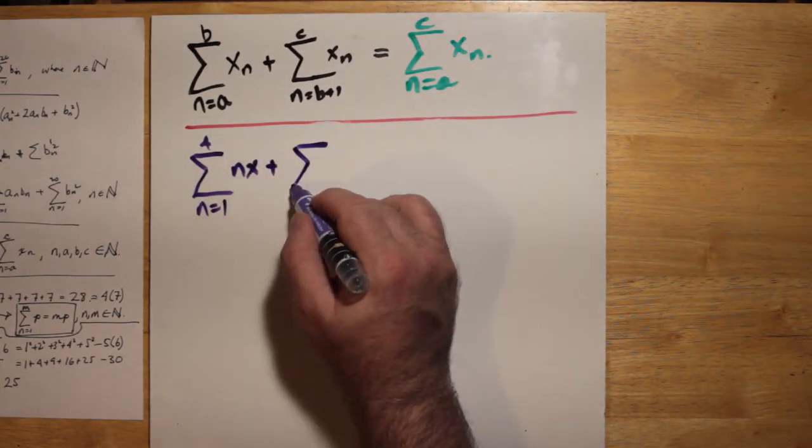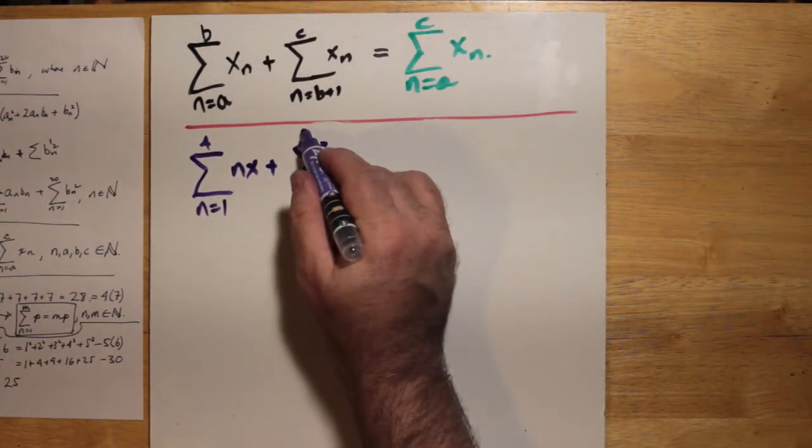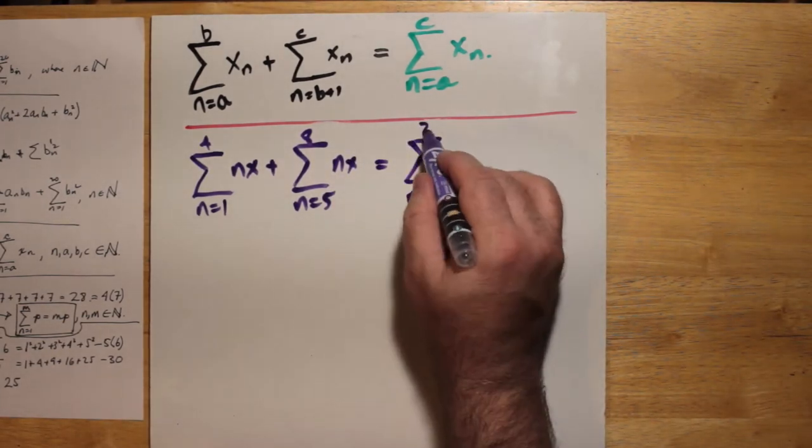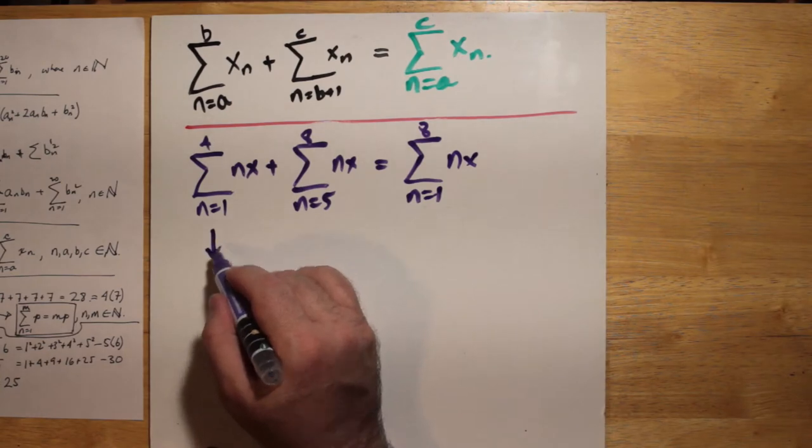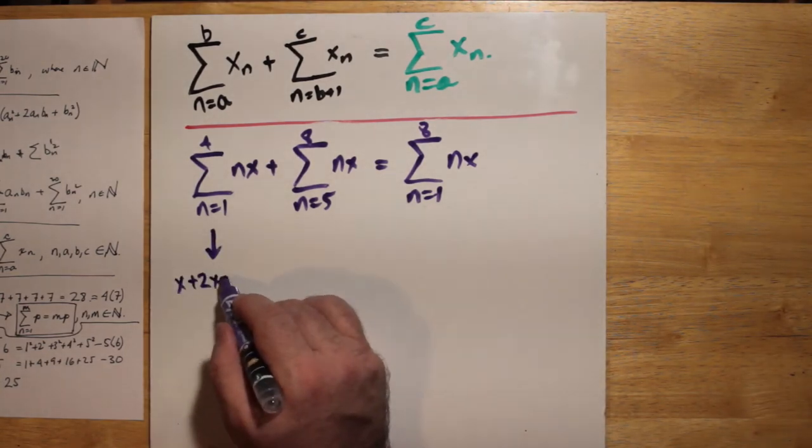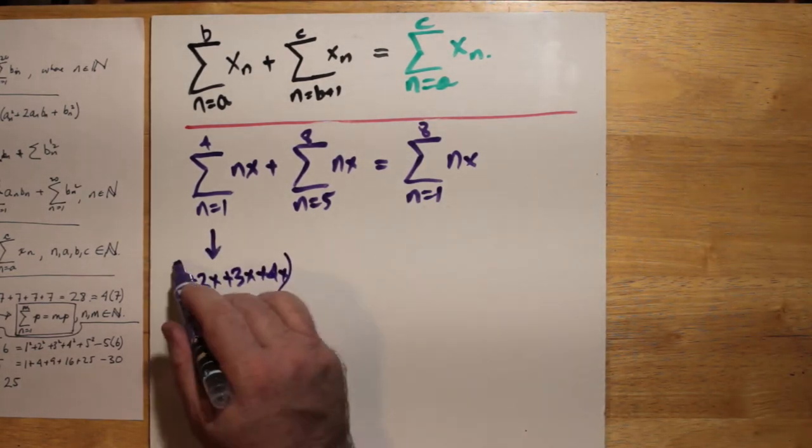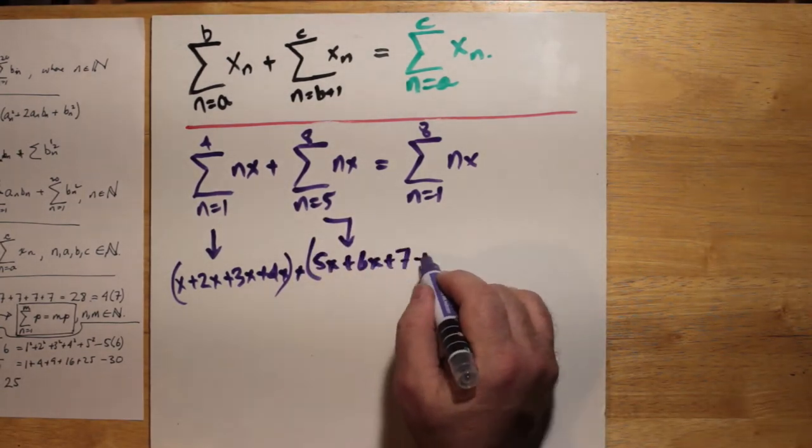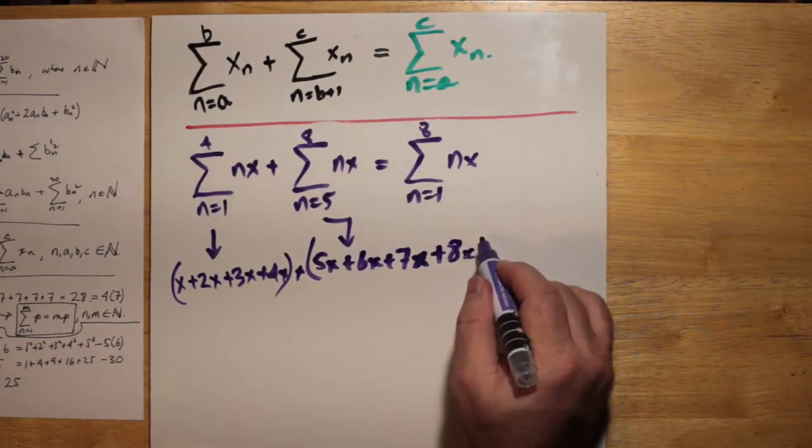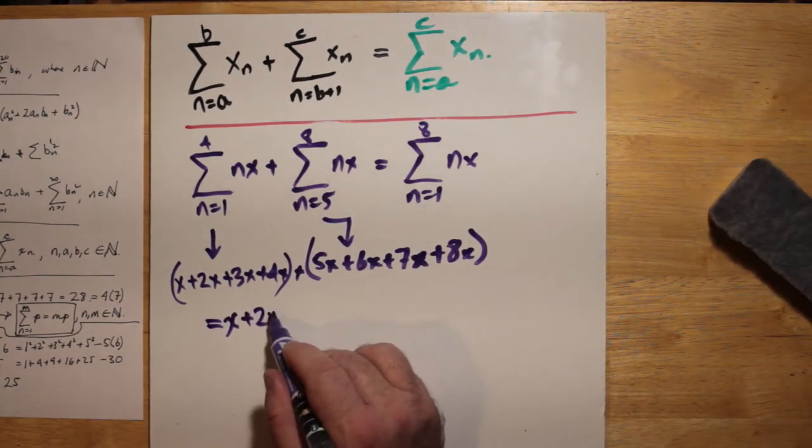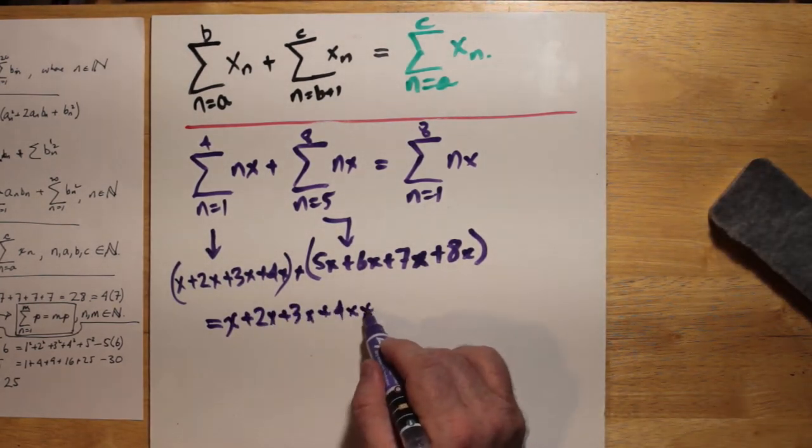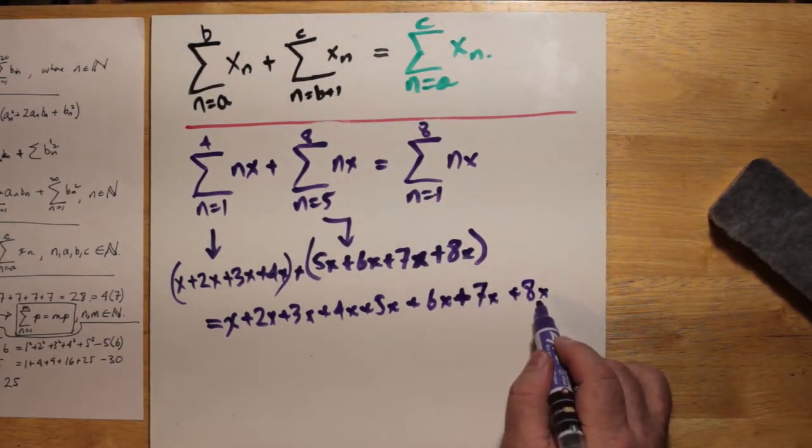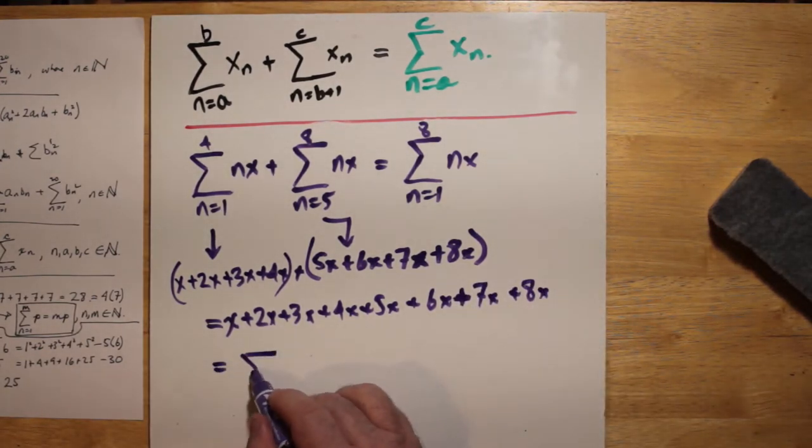So, for example, if we said that the first sum goes from 1 to 4, the second sum goes from 5 to 8 because 5 is the number 1 past 4, then this is the same thing as n going from 1 to 8 in a single sum expression. So you can actually simplify two sums this way. And notice that in this case, we do not substitute for x and we end up with 36x.